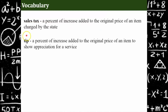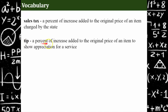Then we have tip, which is a percent of increase added to the original price of an item to show appreciation for service. So you likely will tip when you go to a restaurant and you have a waiter or a waitress, when you get your hair cut, if you valet your car. There are many times in life where we provide a tip, which we calculate as a percent.